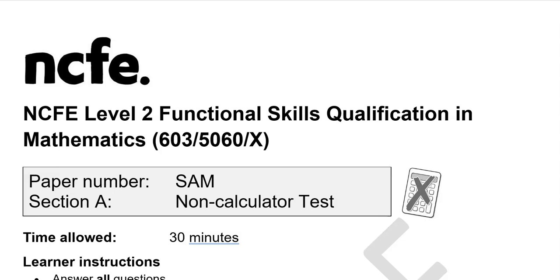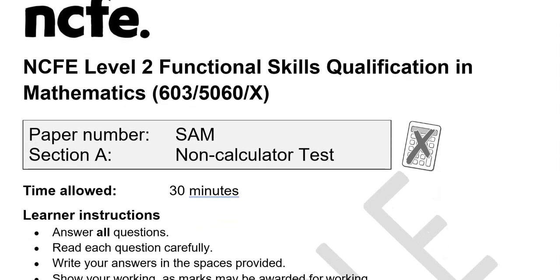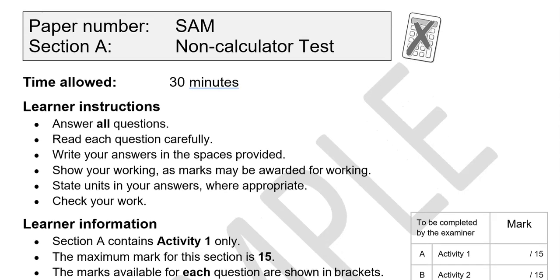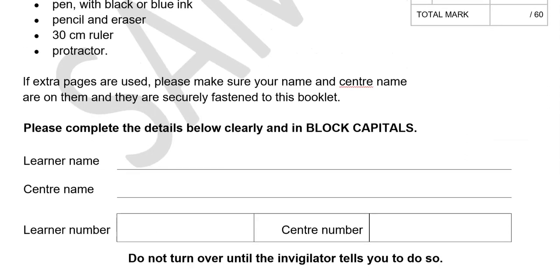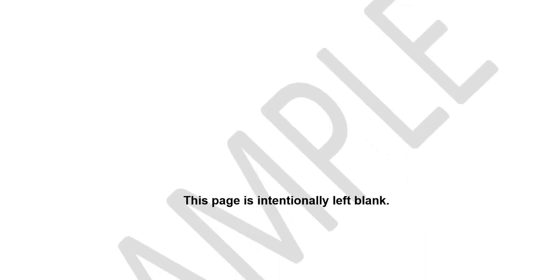This is a Level 2 Functional Skills Maths paper from NCFE. It's split into two parts. In the first part, you can't use a calculator, but in the second part you can. We'll start with the first part, taking each question one by one in turn.